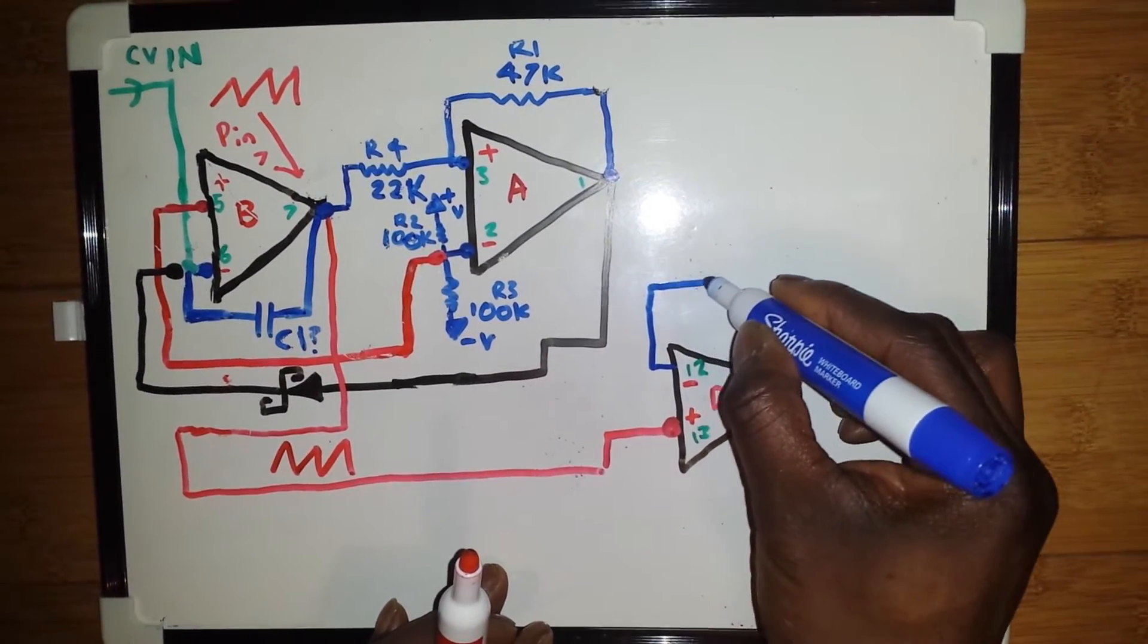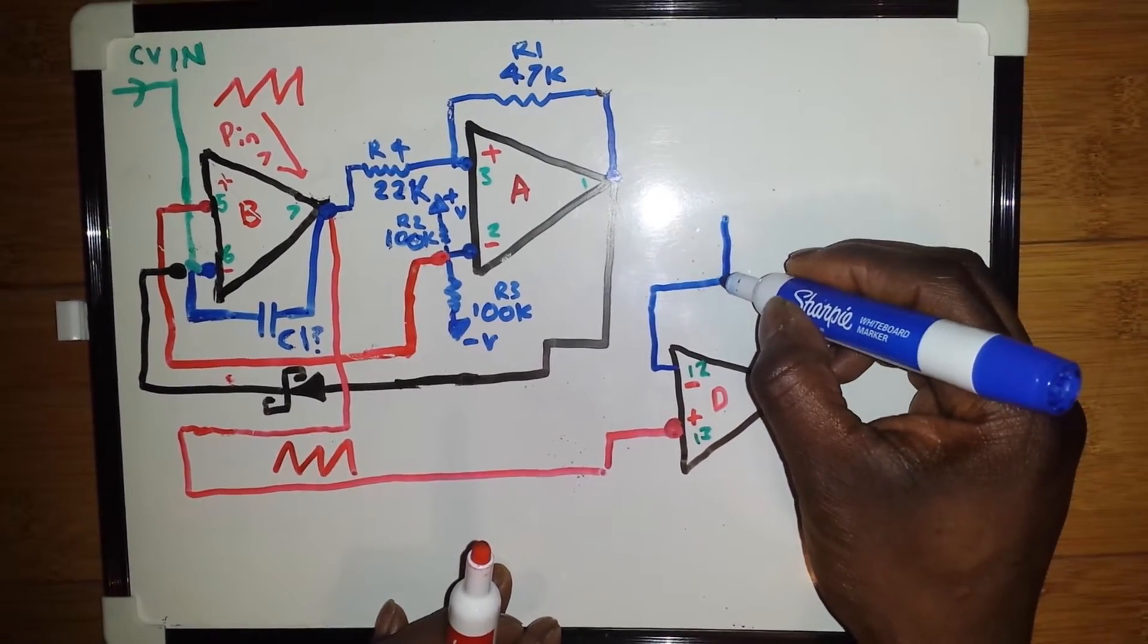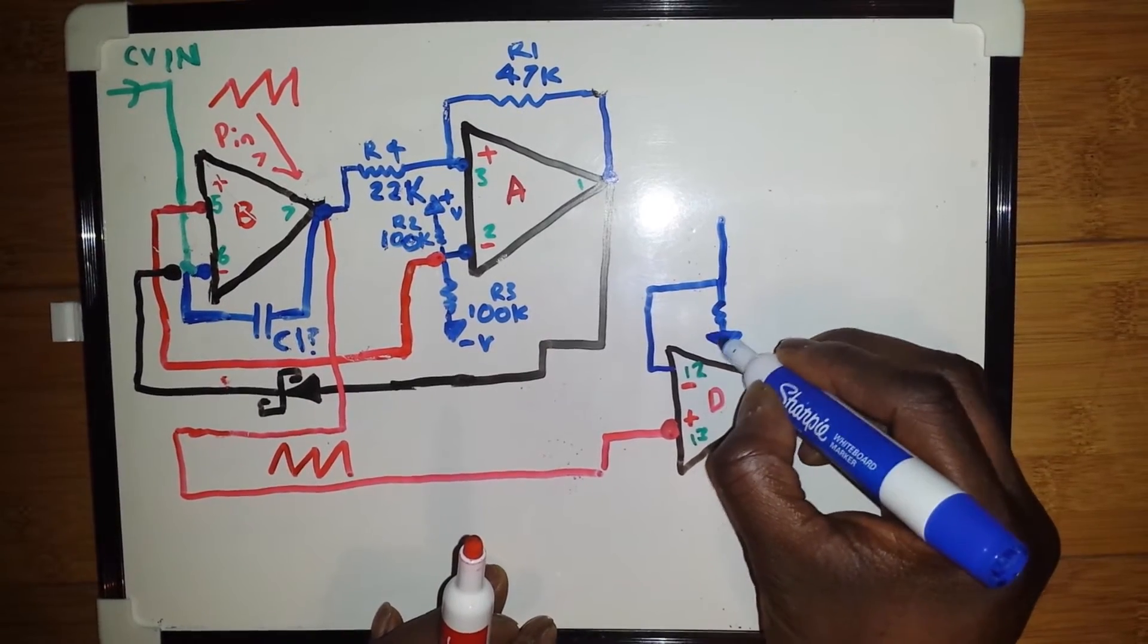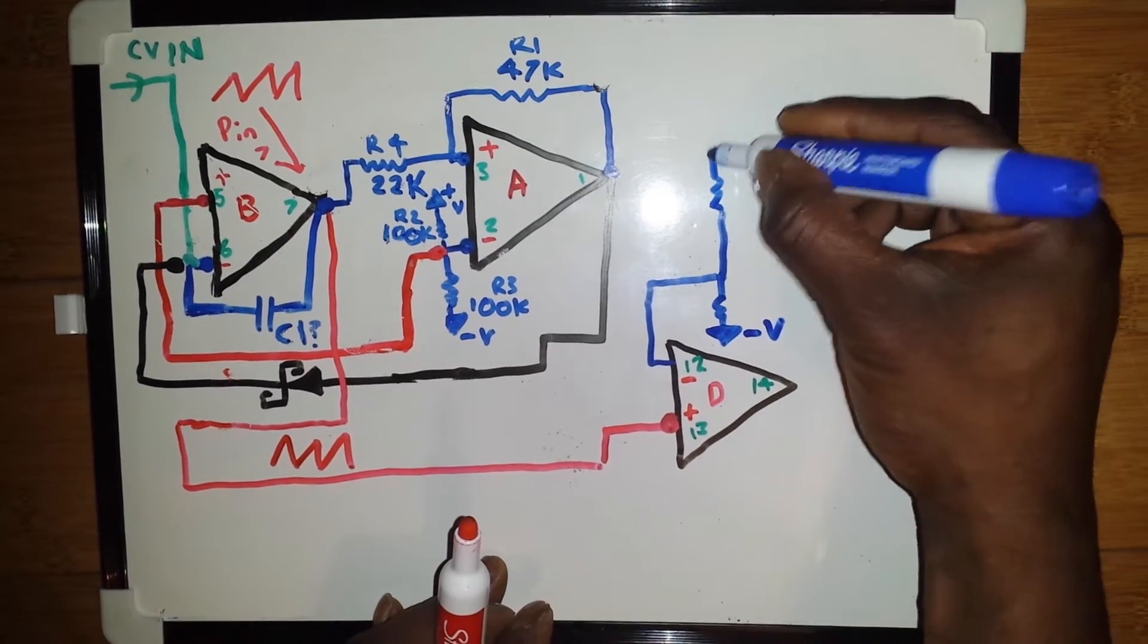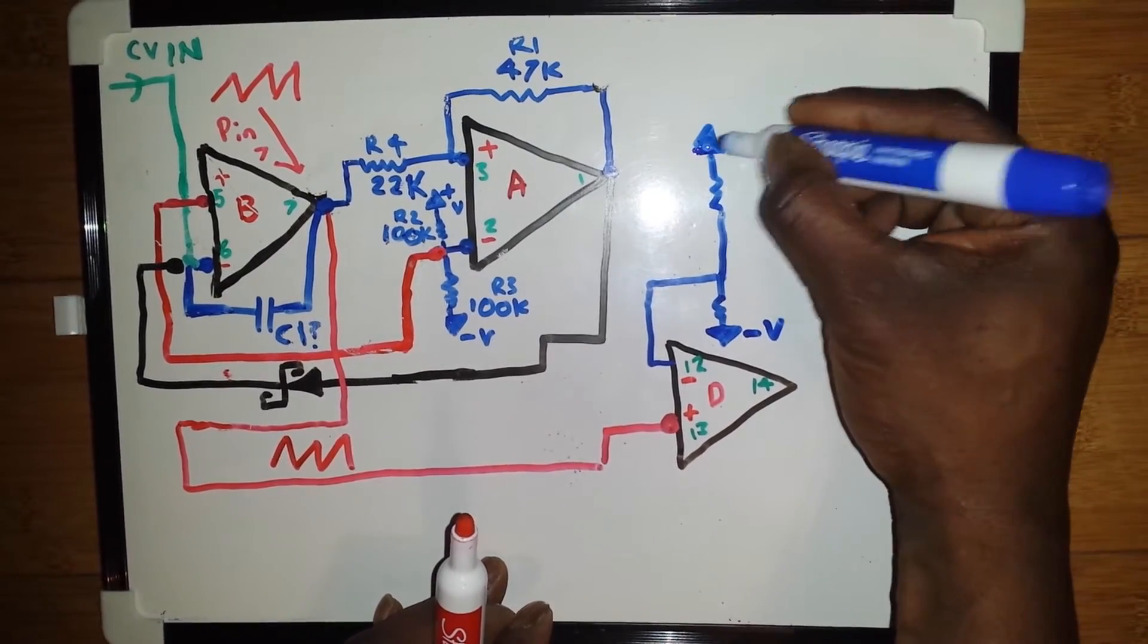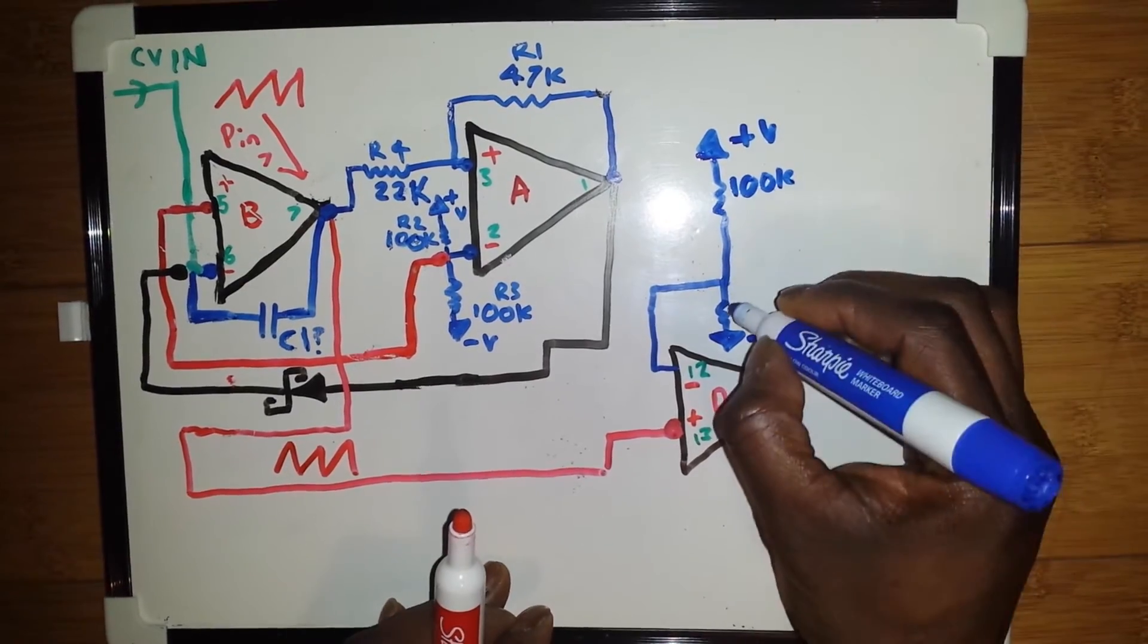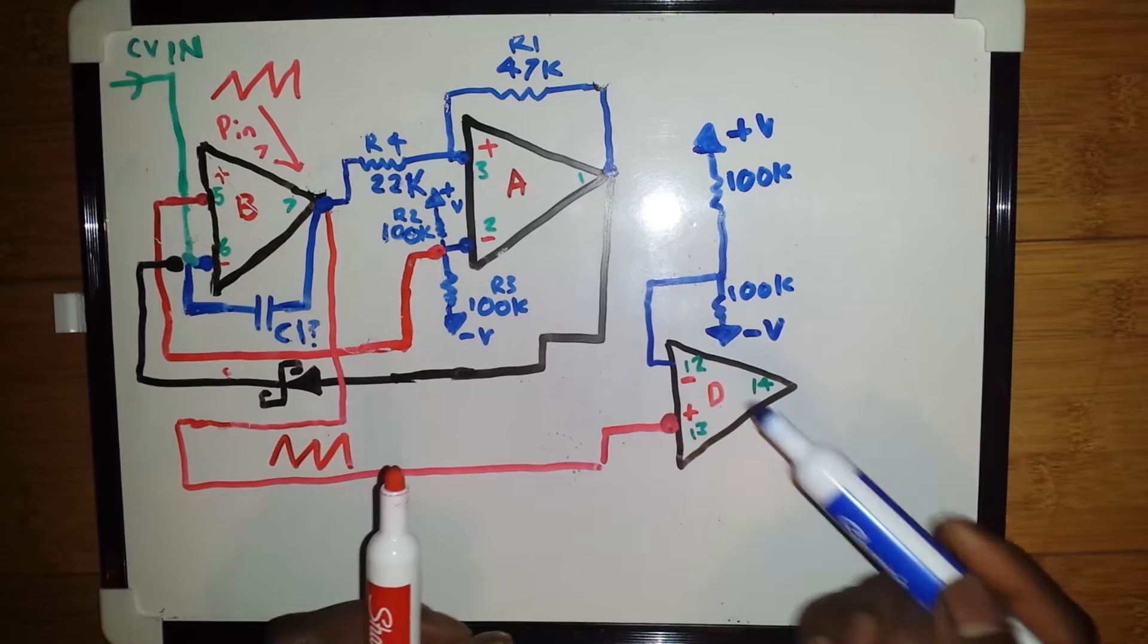And again, if we come here, we will take from the inverting input two resistors. One to the minus voltage and one to the plus rail, both 100k in value. And that is basically it.